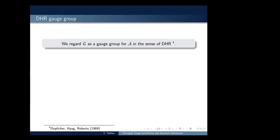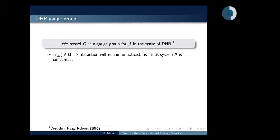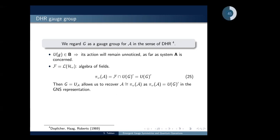We can regard this group G as a gauge group for the original algebra in the sense of Doplicher-Haag and Roberts. Why? Because the action of this group in the GNS space is transparent as far as system A is concerned, since the elements belong to the commutant — the auxiliary system B. If we interpret the algebra of the emergent system C as a field algebra, we recover the original algebra by intersecting this field algebra with the commutant of the action of our gauge group. So we can interpret this group as a gauge group in this sense.